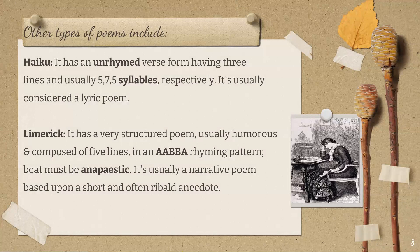Other types of poems include haiku, which is an unrhymed verse form having three lines — a tercet — and usually five, seven, five syllables respectively. It is usually considered a lyric poem. A limerick, on the other hand, is a very structured poem, usually humorous and composed of five lines in an A-A-B-B-A rhyming pattern. The beat must be anapestic, which is weak-weak-strong. It is usually a witty poem based upon a short and often comical anecdote.